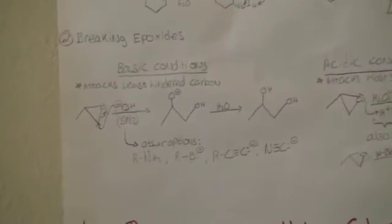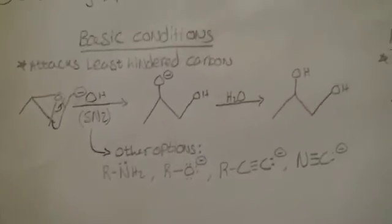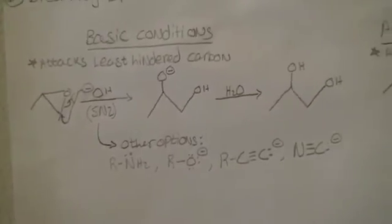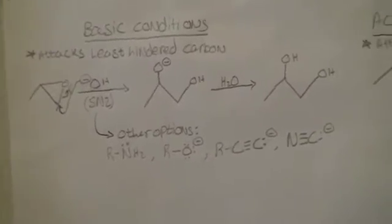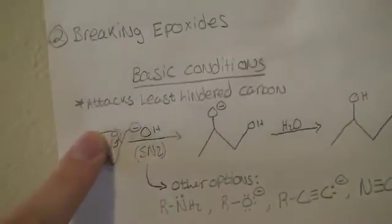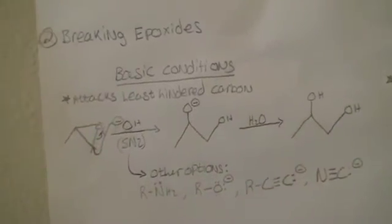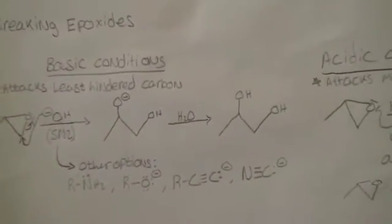You want to break them? Well, you need to know whether you're in acidic or basic conditions. If you're in basic conditions, it's an SN2 type reaction. The nucleophile, there's no protons present. The nucleophile attacks the least sterically hindered carbon involved in your epoxide ring. And you get that.